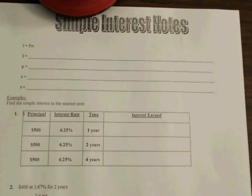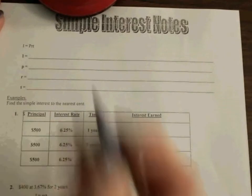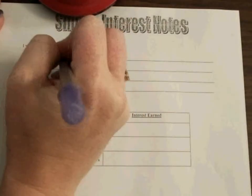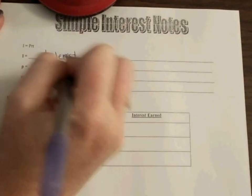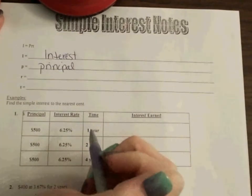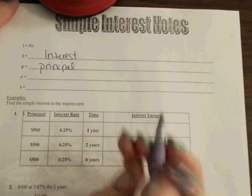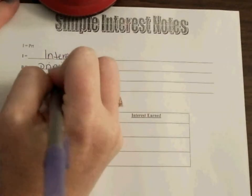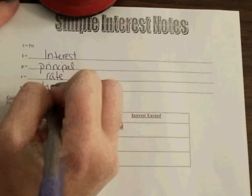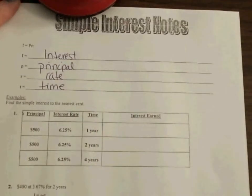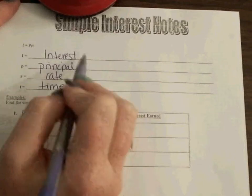So this formula right here shows up on your formula chart and it says I equals PRT. So we break everything down into its components. The I is interest. The P is principal. That is the amount you start with, what you put in the bank to start with. Your rate is typically the percentage and your T is time, how long you have it going through there. So if we multiply all of these things together that is how we end up with our interest.